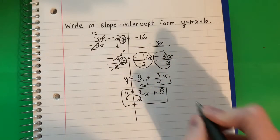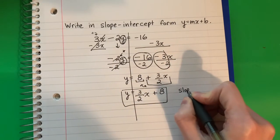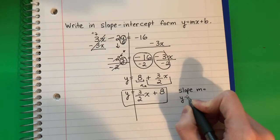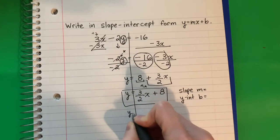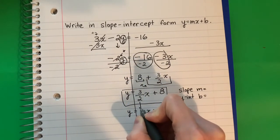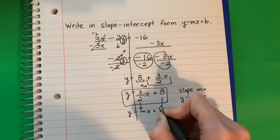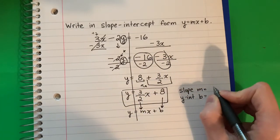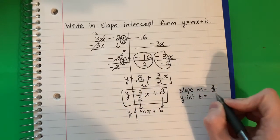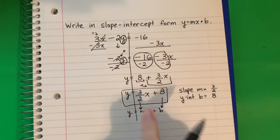So which number is my slope? Remember slope is m. And then I have my y-intercept b. Remember it's y equals mx plus b. The number with x is m and the number with no x is b. So m is 3 divided by 2, and my y-intercept b is 8. This is my answer.